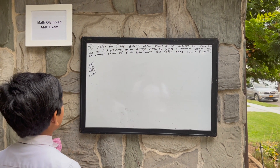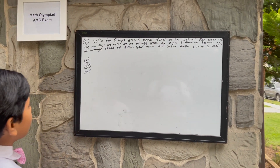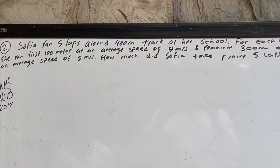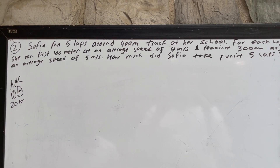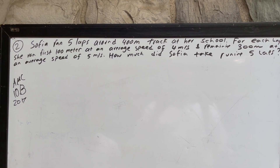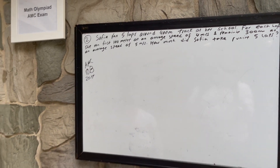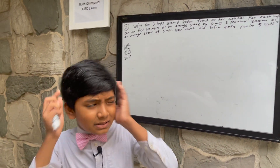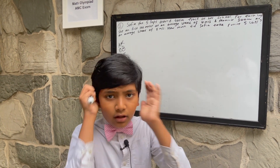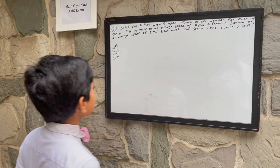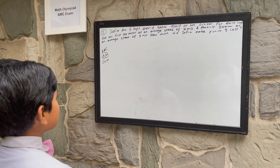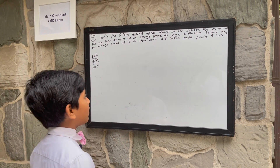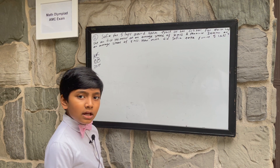For each lap, she ran the first 100 meters at an average speed of 4 meters per second, and the remaining 300 meters at an average speed of 5 meters per second. Wow, for five laps? How long did Sophia take to run five laps?